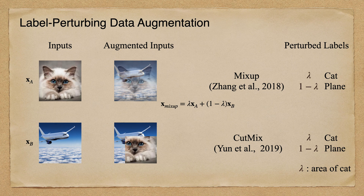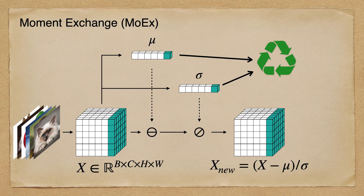Given this, we propose to use feature normalization for data augmentation on the basis of the label perturbing scheme. Feature normalization could be an important element to augment the data. Therefore, we propose Moment Exchange, or MOX, to encourage using extracted moments.